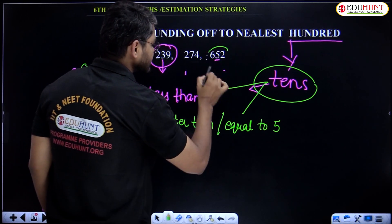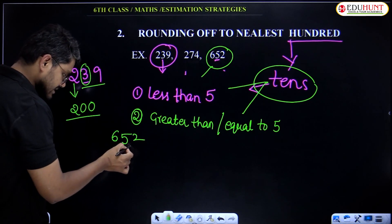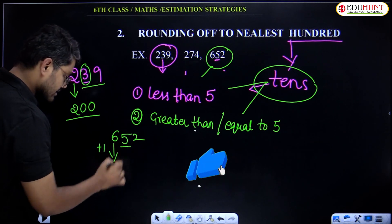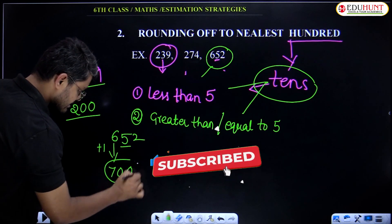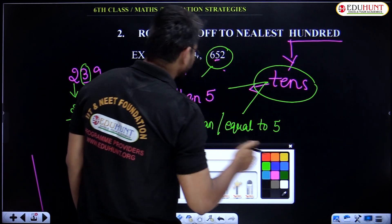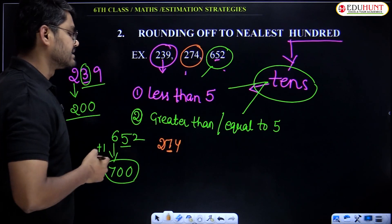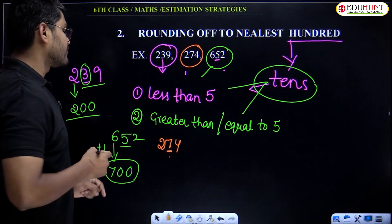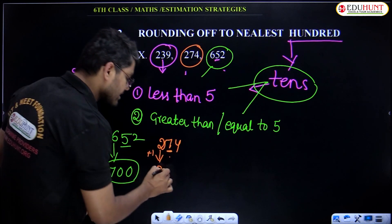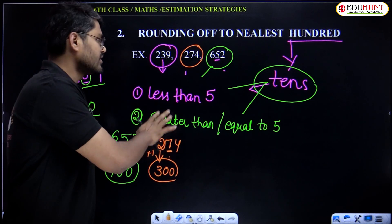Take 652. The tens digit is 5, which is equal to 5. Add 1 to the hundreds digit: 6 plus 1 equals 7, remaining digits are 0 and 0. Answer: 700. Take 274. The tens digit is 7, which is greater than 5. Add 1 to the hundreds digit: 2 plus 1 equals 3, remaining digits are 0s. Answer: 300. Same concept applies everywhere.